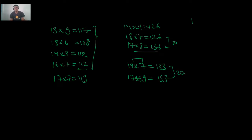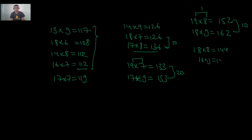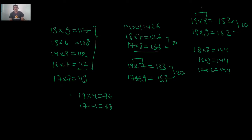Similarly, 19 × 8 = 152 and 18 × 9 = 162 — difference of 1 between 9 and 8 corresponds to a difference of 10 in the products. Also: 18 × 8 = 144, 16 × 9 = 144, 12 × 12 = 144. Numbers ending with 8: 19 × 4 = 76, 17 × 4 = 68. You should be quick enough to answer any multiplication table question within 2–3 seconds.